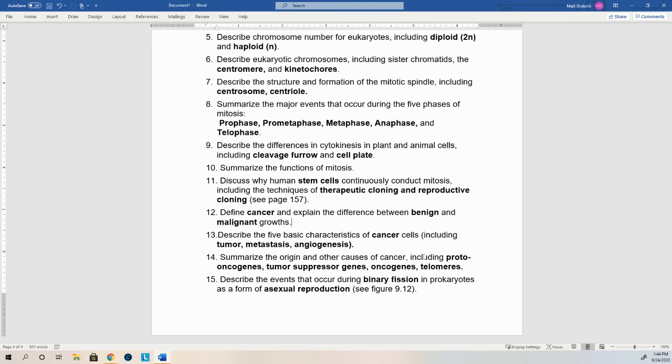Discuss why human stem cells continuously conduct mitosis, including the techniques of therapeutic cloning and reproductive cloning. So the textbook goes through a good discussion of cloning. Mitosis gives us identical daughter cells, that's cloning. Stem cells are undifferentiated cells. They do not know what they're going to be when they grow up. As our cells mature during embryonic development, that mass of cells, of replicating cells, initially all those cells have all of the DNA, just like all of our cells do, and all of it is active. Any of the DNA could begin to function. So we call it a stem cell. It can become anything. It doesn't know what it's going to be when it grows up.